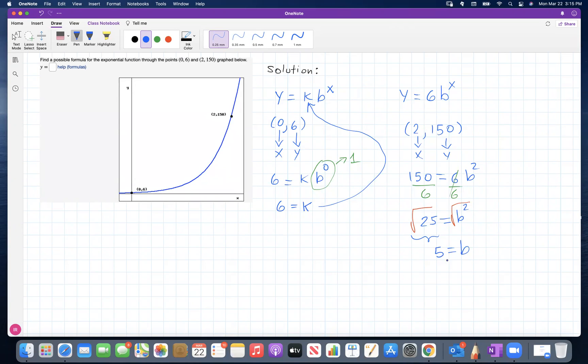So now that I got b, I can go back to the equation and replace it. Therefore, we have found an exponential function satisfying the requirement, which is y equals 6 times 5 raised to x.